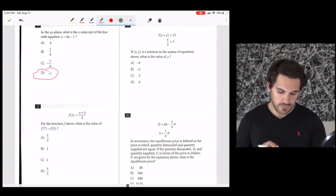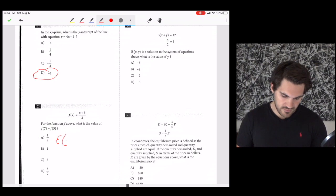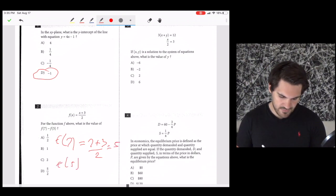Number two, for the function f above, what is the value of f of 7 minus f of 5? We need to calculate f of 7 and calculate f of 5 and then subtract f of 5 from f of 7. f of 7 is 7 plus 3 over 2, which just becomes 5. f of 5 is 5 plus 3 over 2, which becomes 4. 5 minus 4 is 1, so our answer is b.